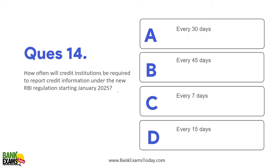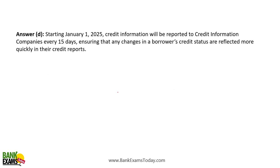How often will credit institutions be required to report credit information under the new RBI regulations starting January 2025? They need to do it every 15 days. Previously it was every month, but now they need to provide credit reports for borrowers every 15 days.